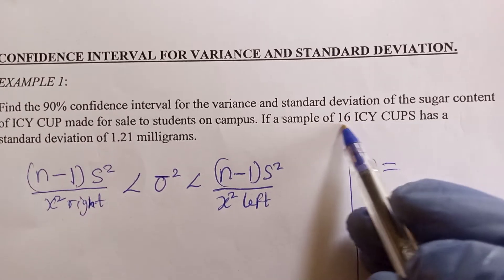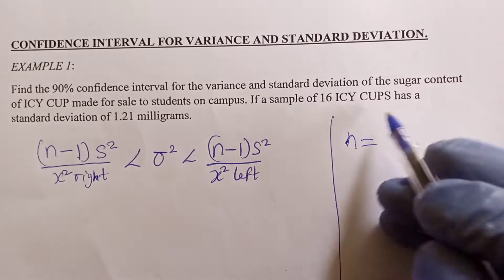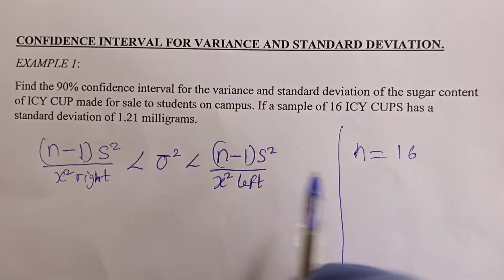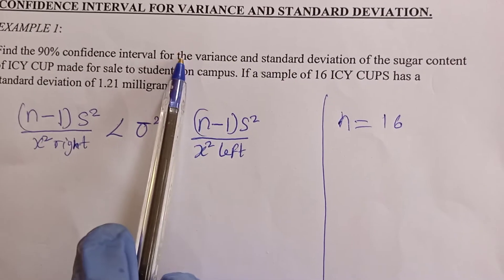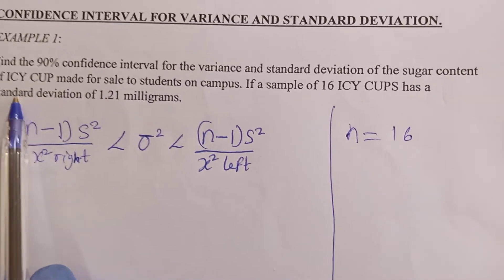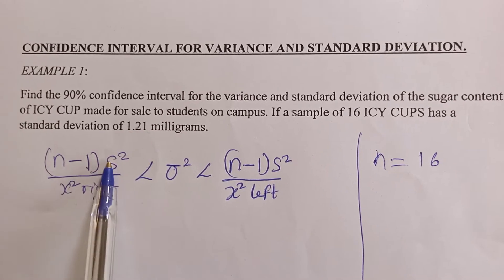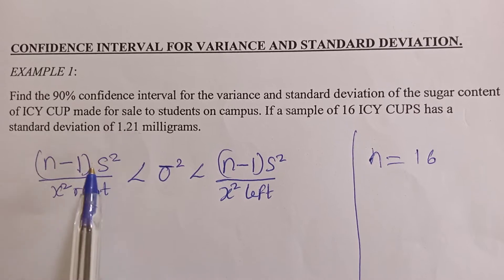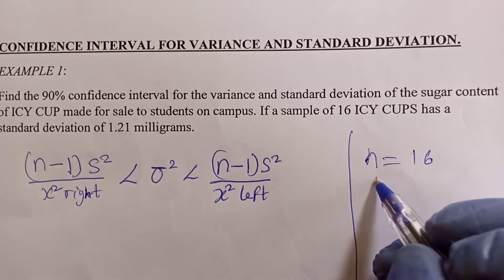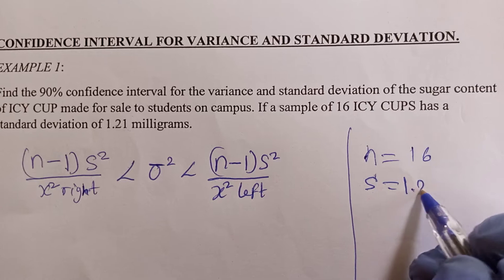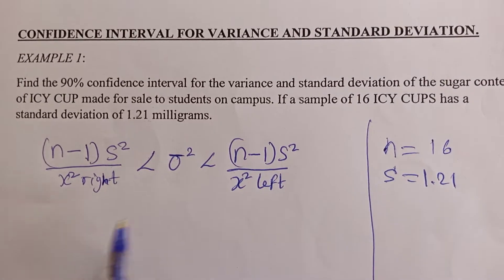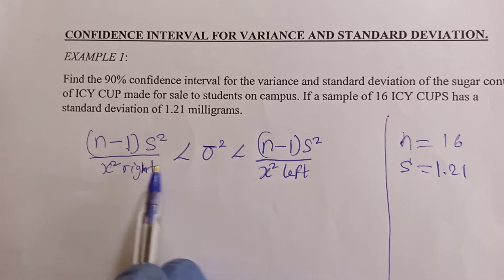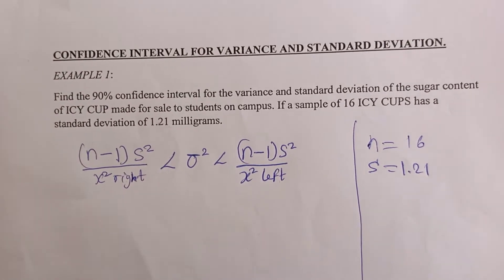Now, our n is 16 — the question says it took a sample of 16. The question also gave us a standard deviation of 1.21, so our sample standard deviation s is 1.21. Now we need chi-right and chi-left.